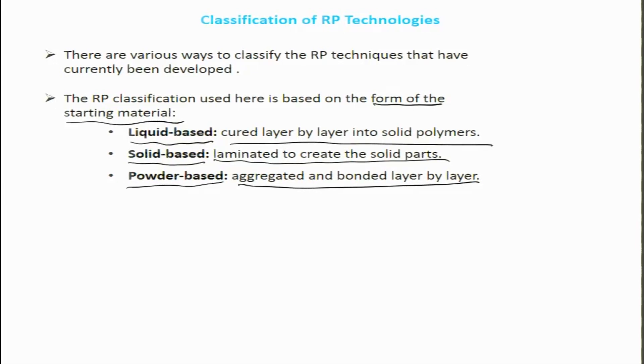We will go into the details of each of these, looking at aspects associated with stereolithography — a liquid-based 3D printing process — FDM, which is based on solid extruded polymer, and powder-based SLS, which uses lasing and sintering action. This was a shorter module to fill the gap from last week's lectures. In the next module, we will start a detailed discussion of these individual techniques. Thank you very much.